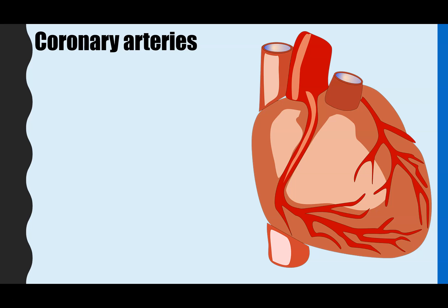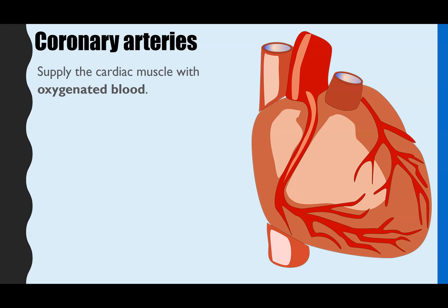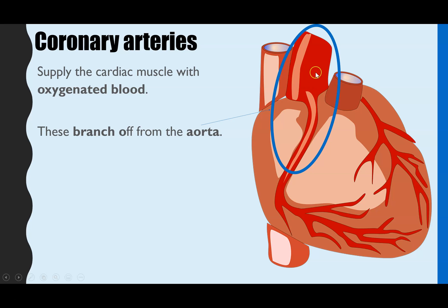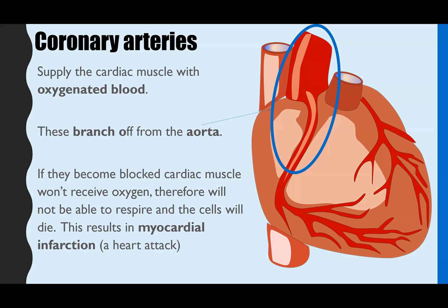Next, coronary arteries. These are the blood vessels surrounding the heart and they supply the cardiac muscle with oxygenated blood to make sure it never fatigues. We can see here that the coronary arteries are branching off from the aorta — one branching off this side and one off the other side. They branch further all the way down so all of the cardiac muscle is supplied with oxygenated blood.